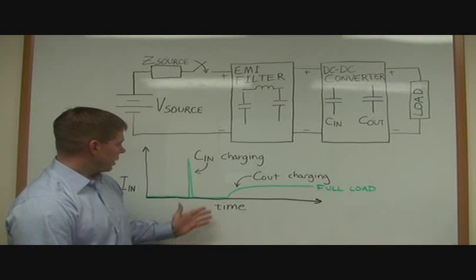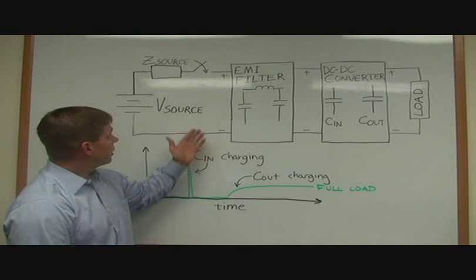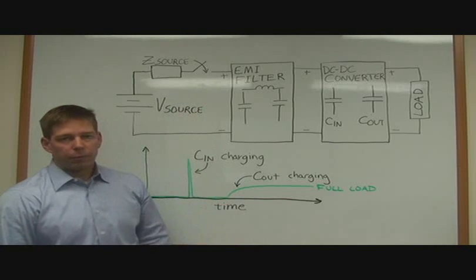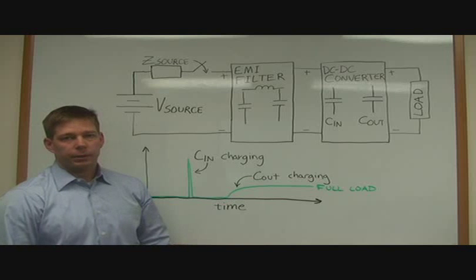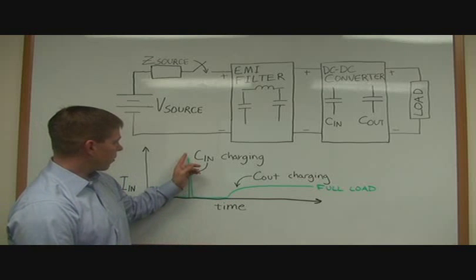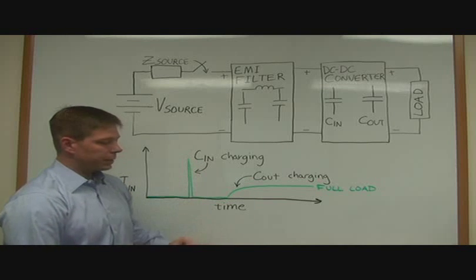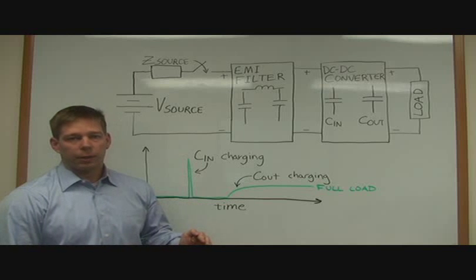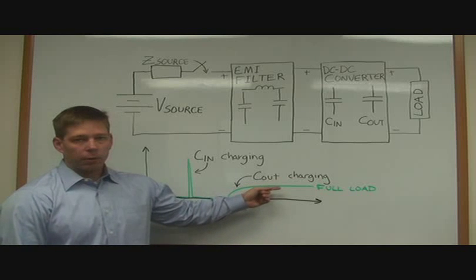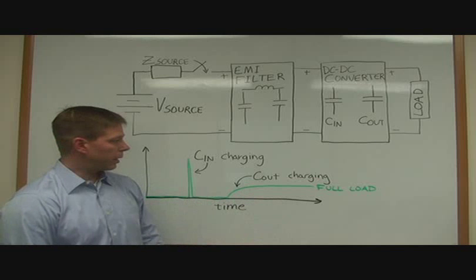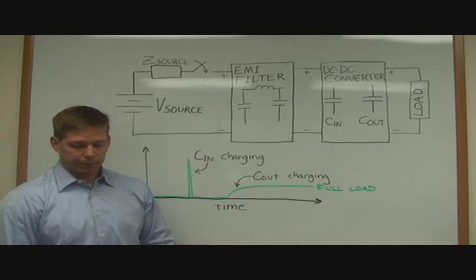So in those cases, the fast DVDT of the input voltage and the low source impedance causes this current to rise very rapidly, can reach peaks many times higher than the typical full load running current, and that can cause EMI issues in a system.